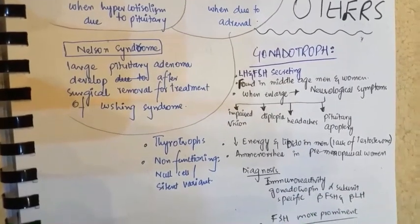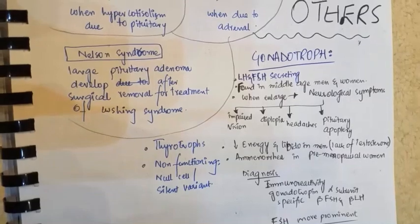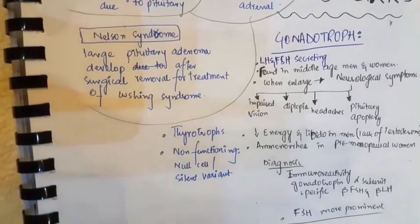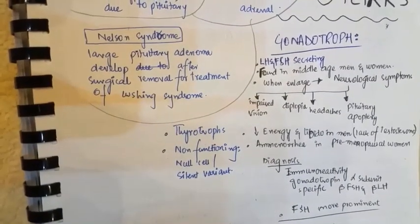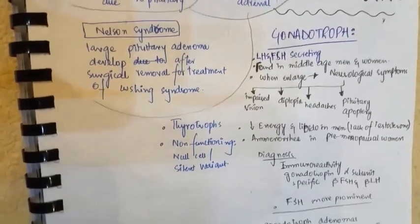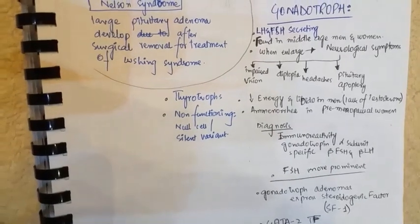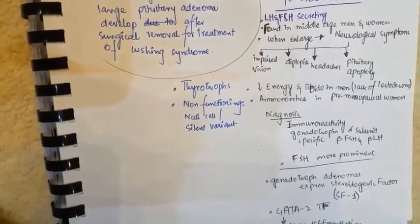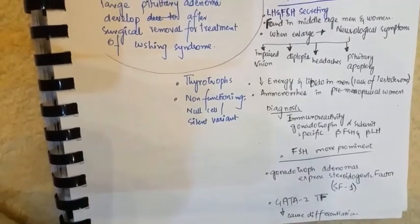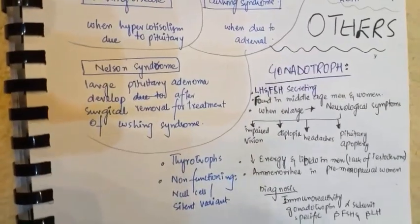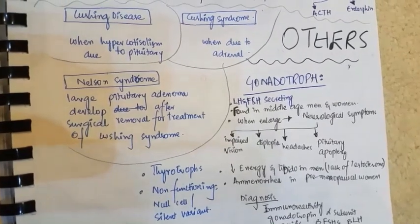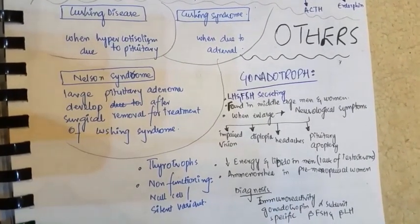For diagnosis, immunoreactivity for gonadotropin alpha subunit and the specific beta-FSH and beta-LH subunits is used; FSH is more prominent in gonadotrophs. Gonadotroph adenomas express steroidogenic factor SF1 and GATA2, which causes differentiation of reproductive cells. Other types include thyrotroph adenomas and non-functional adenomas, which consist of null cells and silent variants.